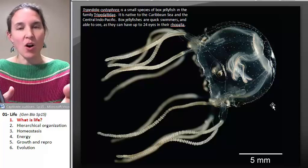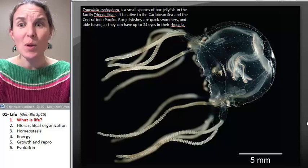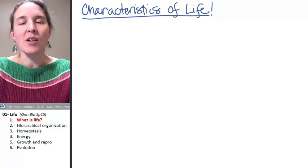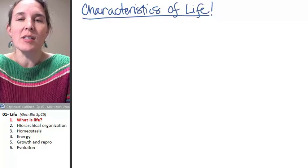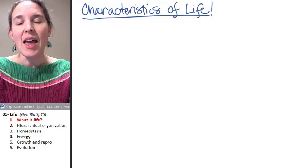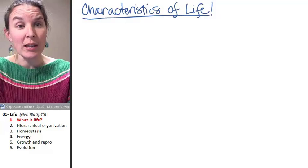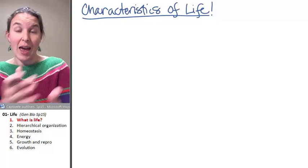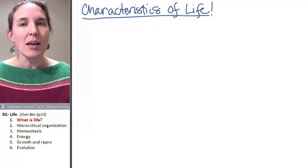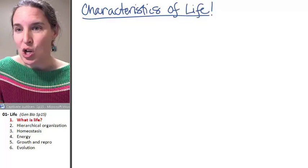Before we dive into all the coolness, which is inevitable, we need to figure out what are the characteristics that help us determine that all those things we just looked at are actually alive. There are five characteristics that in general people have agreed that if something has all of these characteristics, then it probably is alive.